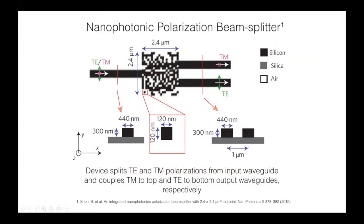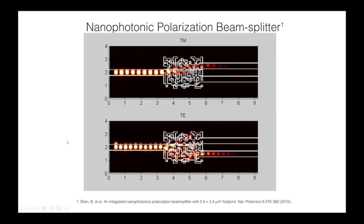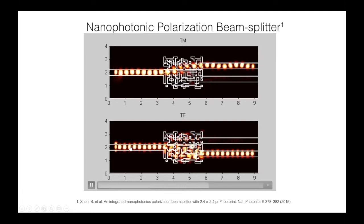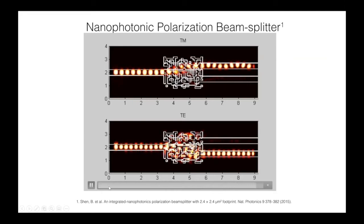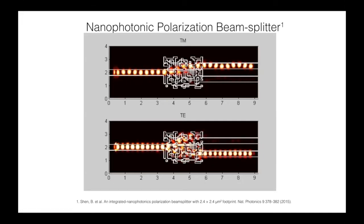On silicon-on-insulator platform, the square pixels are 120 nanometers in side length and 300 nanometers in depth. These are our MEEP simulations for the structures after completion of the optimization. We can see that when there is TM mode, the TM mode couples to the top waveguide, and when there is TE mode, the TE mode couples to the bottom waveguide. During each step of the optimization, this kind of simulation is run in MEEP and the output is stored as the figure of merit for comparison.